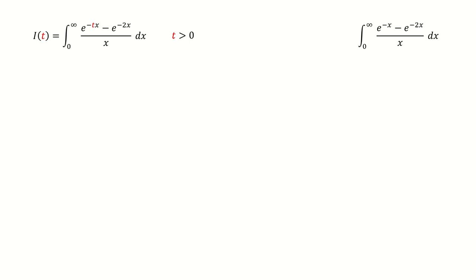First, we define a function i(t). So the original problem equals i(1). It's easy to verify, i(2) equals zero.